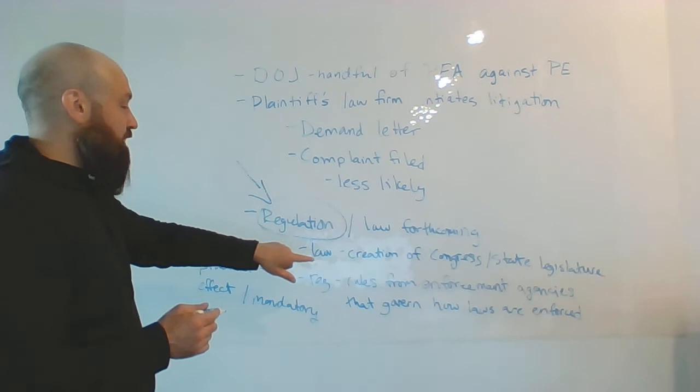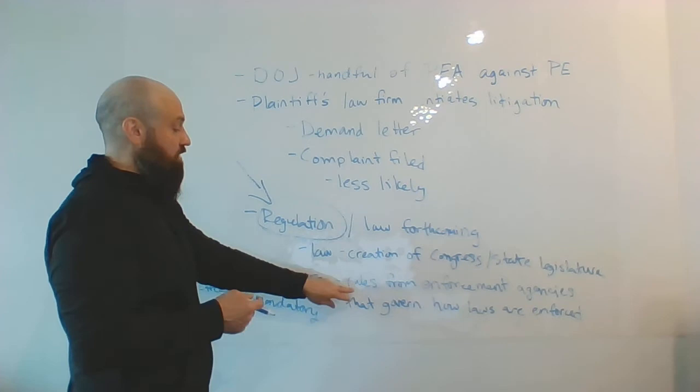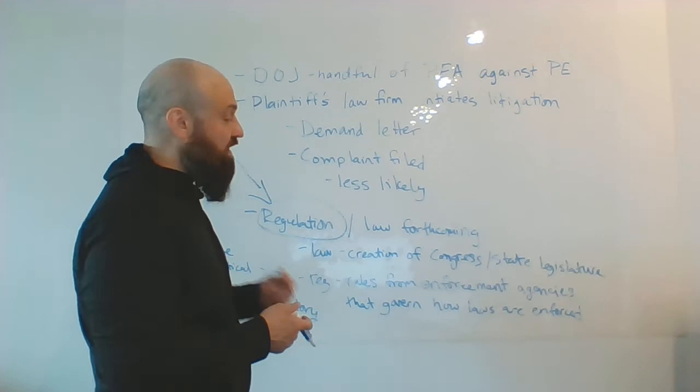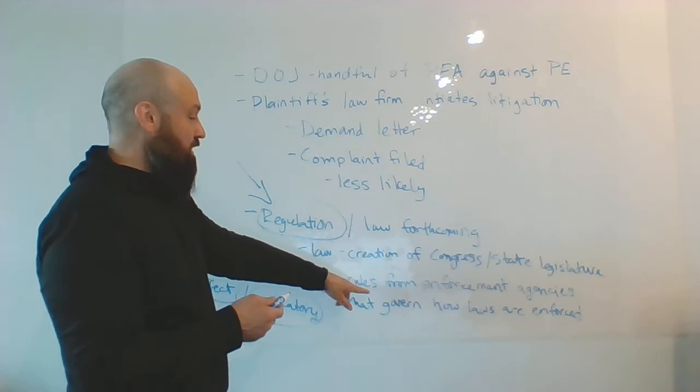A law is a creation of Congress or state legislature, so we might have a federal law from Congress or a state law from the state legislature. Regulation is rules from enforcement agencies that govern how laws are to be enforced. There's the same practical effect—they're both mandatory, you need to comply with both of them—but regulations can usually come about quicker because the legislative process...